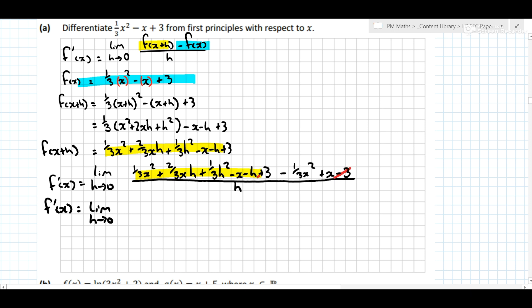So minus 3, 3, x minus x, a third x squared, a third x squared. So what are we left with? We're left with 2 over 3 xh plus a third h squared minus h all over h.